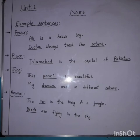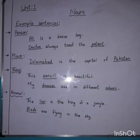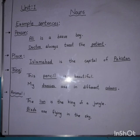Fourth, about animal. Number one — The lion is the king of the jungle. In this sentence, lion is the name of an animal. Number two — Birds are flying in the sky. In this sentence, birds are animals.